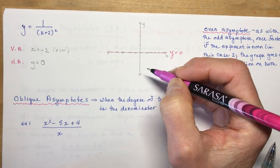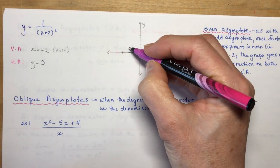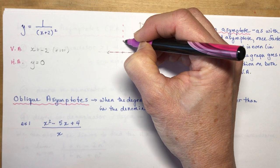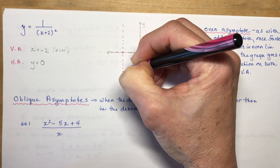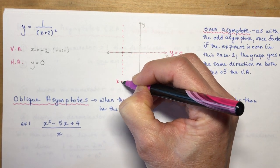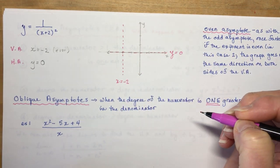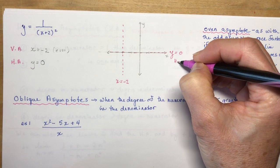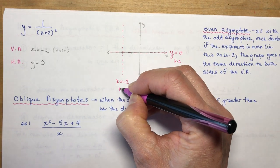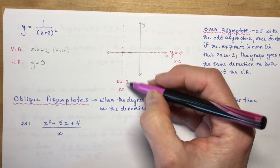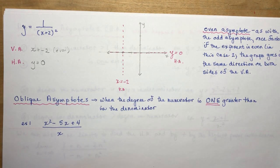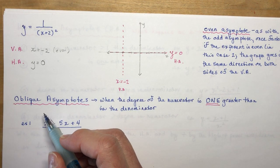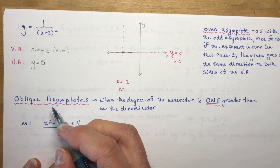I put a dotted line for y = 0 and label it. The other asymptote is x = −2. So I have my horizontal asymptote and vertical asymptote labeled. You will be asked to label these on your graph.